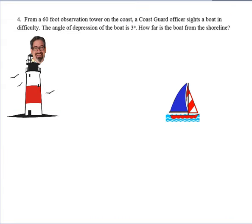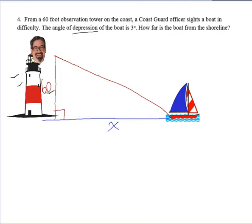Next problem. It says from a 60-foot observational tower on the coast, the Coast Guard officer sights a boat in difficulty. The angle of depression of the boat is 3 degrees. How far is the boat from the shoreline? So the question is, how far is the boat from the shoreline? This is what we are solving for. What else do we know? We know that the observation tower is 60 feet tall. So that's 60 feet. So here's our right angle. So now, when I connect this, and it says that the angle of depression is 3 degrees, that means Mr. Doolman up here, when he's looking out, if he looked out straight, this is called the line of sight. When I look down, I create this angle here, which is my angle of depression.